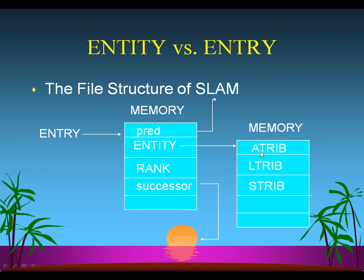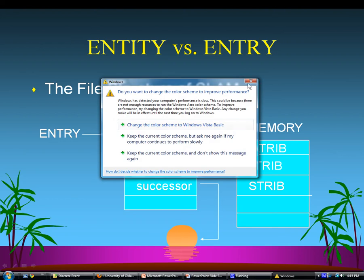Entity pointers point to the attribute information. Entry pointers point to the information in the file. Each entry in a file has a predecessor and successor pointer, which allows you to link up the series of items in the file.